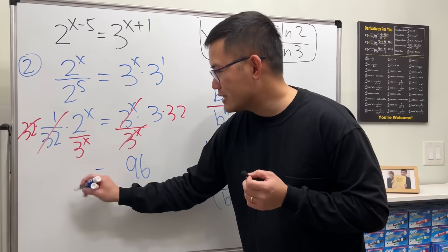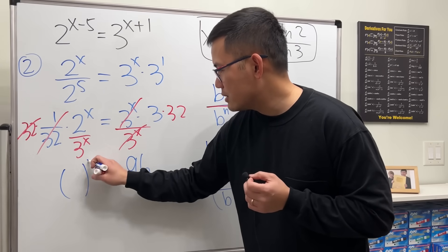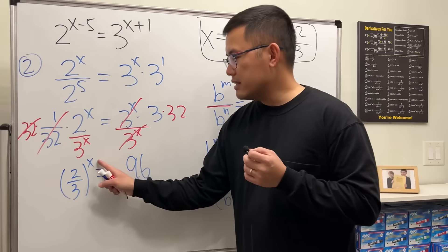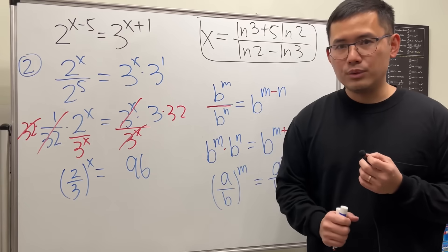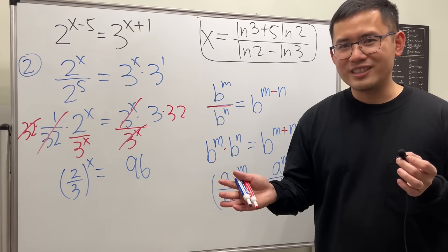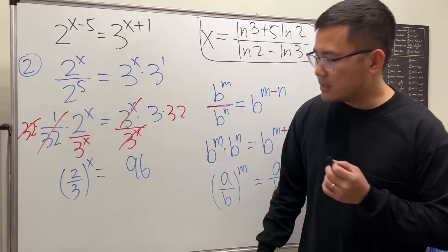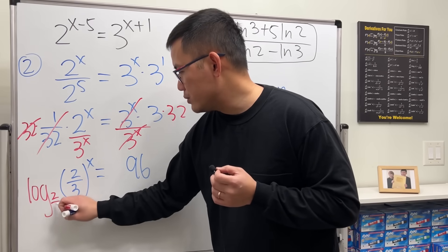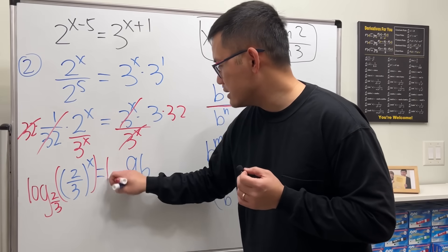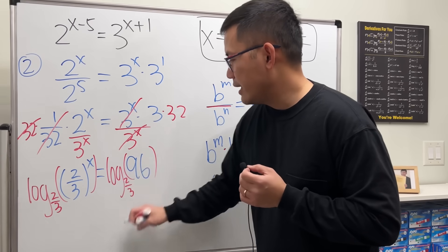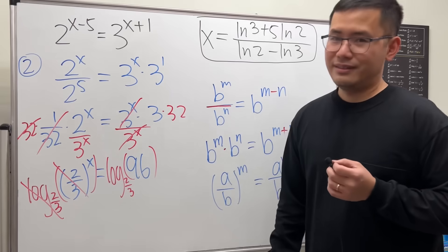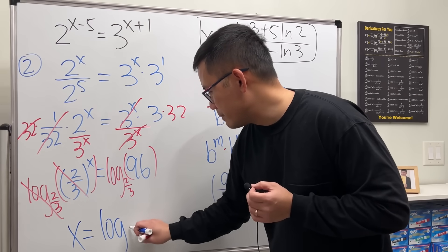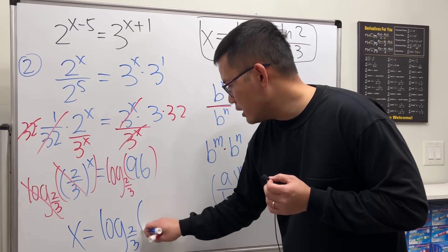x and x, we can put it on the outside and say that parentheses 2 over 3 raised to the x power. Now, when we have x in the power, again, we will have to use logarithm with whatever base that you want. The best base for this case is the same base, which is 2 over 3. So take log base 2 over 3 on both sides. And this and that can cancel. So finally, you can see that x is just equal to log with base 2 over 3 of 96.